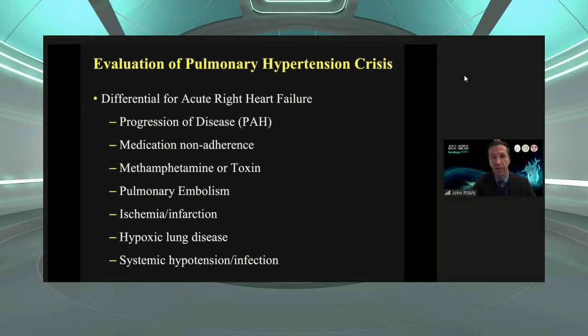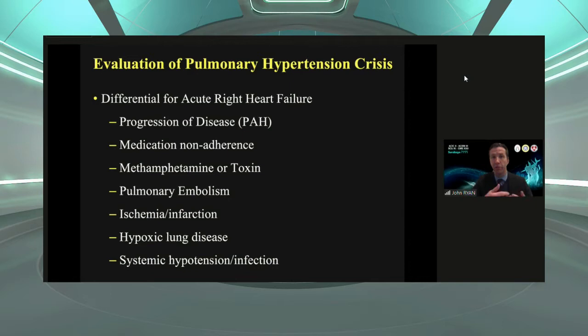It can be progression of disease — pulmonary arterial hypertension is progressive and our medicines don't cure it. It can be medication non-adherence, as in this case; if you stop those medicines, you get a rebound — pressures go up, pulmonary vascular resistance goes up. Where we practice, methamphetamine and other toxin exposures can trigger right heart failure. Pulmonary embolism plays a significant role and needs to be ruled out.